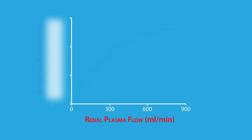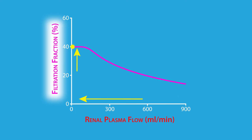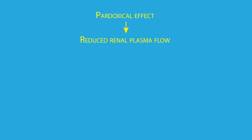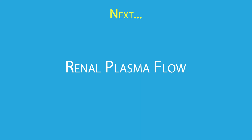For example, at a typical renal plasma flow of 600 milliliters per minute, the filtration fraction is about 20%. Increases in renal plasma flow result in a decreased filtration fraction, but only slightly. However, decreases in renal plasma flow lead to a larger filtration fraction — at very low renal plasma flows, the filtration fraction reaches a maximum of about 40%. So the paradoxical effect is due to a reduction in renal plasma flow, which leads to an increase in filtration fraction, which results in increased glomerular capillary colloid osmotic pressure, which in turn counters the effects of the increased hydrostatic pressure.